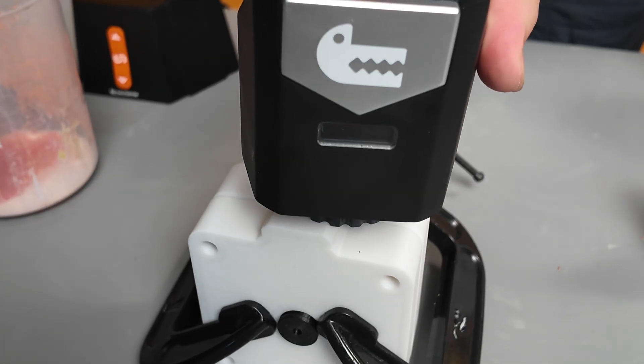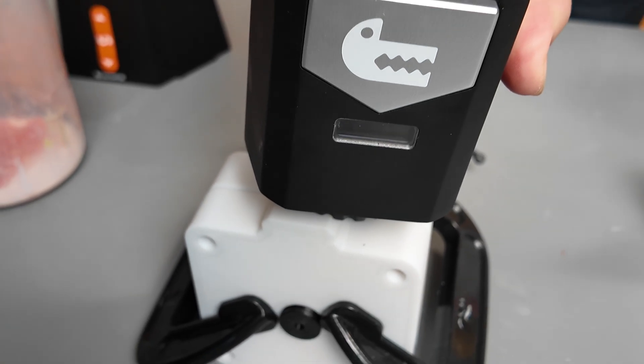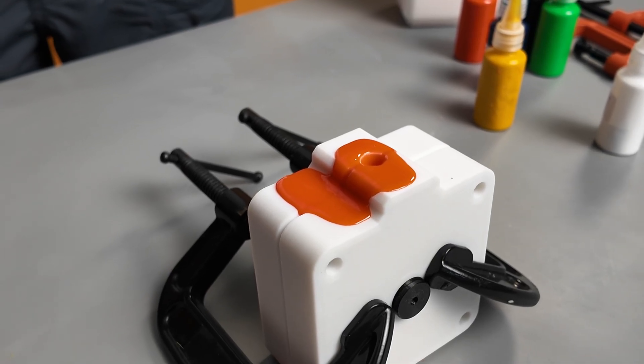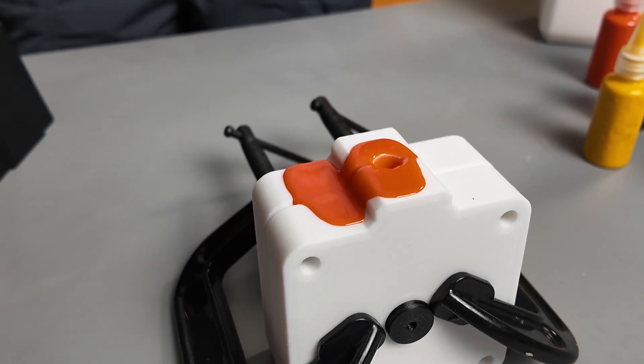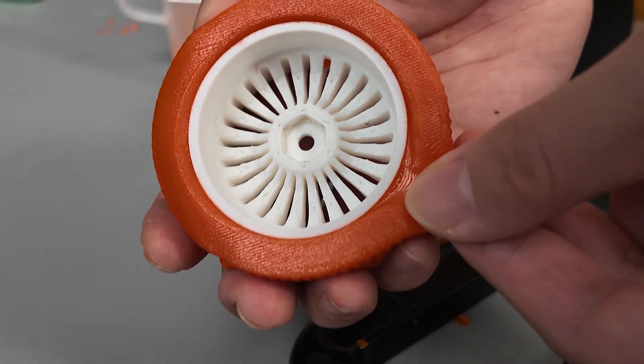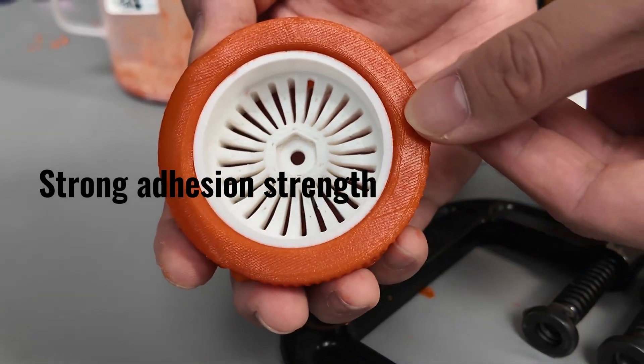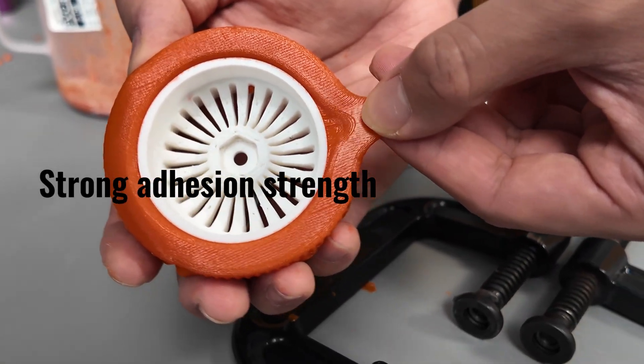ABS bonds exceptionally well with soft PVC during hot injection, so the two materials fuse together without glue or complex connectors. That means you can achieve a strong, clean bond between soft and hard parts in a single molding process.